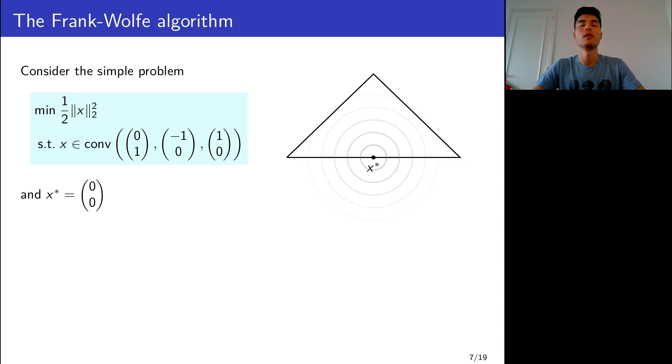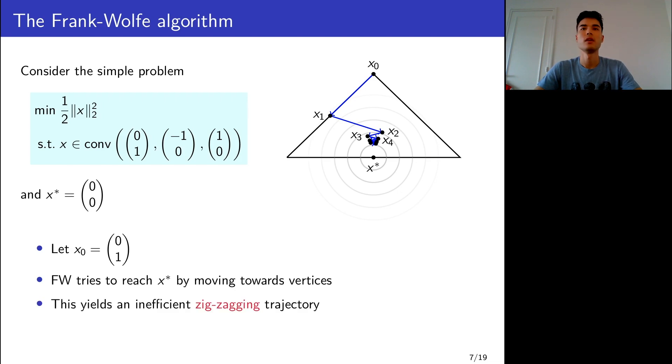Just consider the following very simple illustration: minimizing the square norm over a triangular region, starting from the top vertex. Remember that Frank-Wolfe minimizes the function by moving towards vertices. In this case, for example, you pick the bottom left vertex, you move in that direction, and then you iterate. You can see that Frank-Wolfe yields this very inefficient zigzagging behavior. This is the main limitation of Frank-Wolfe. Because it is only allowed to follow vertex directions, the sequence of iterates produced might be very suboptimal.